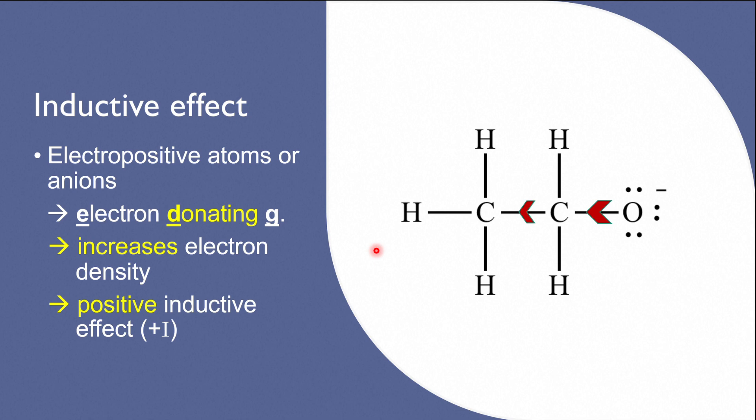This positive inductive effect is also felt by the subsequent carbon atom in the chain, but at a much lesser degree. So electron-donating groups increase electron density and have a positive inductive effect.